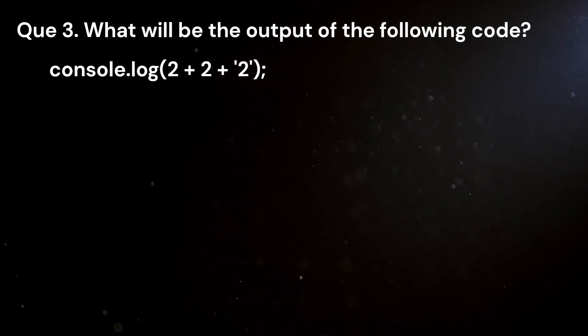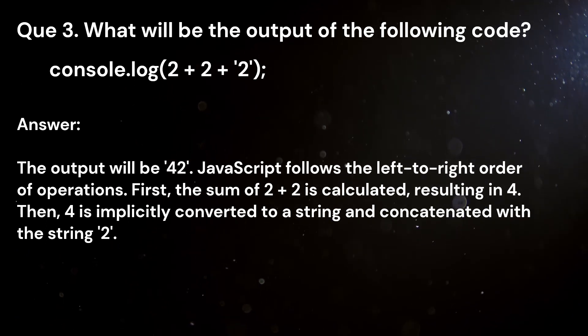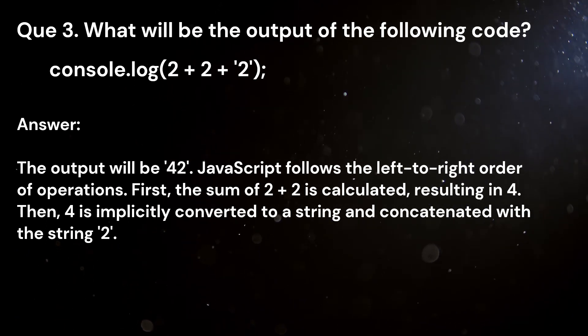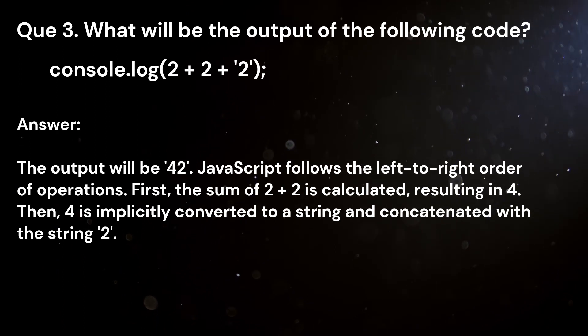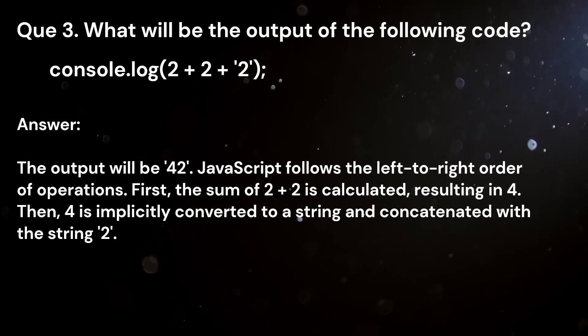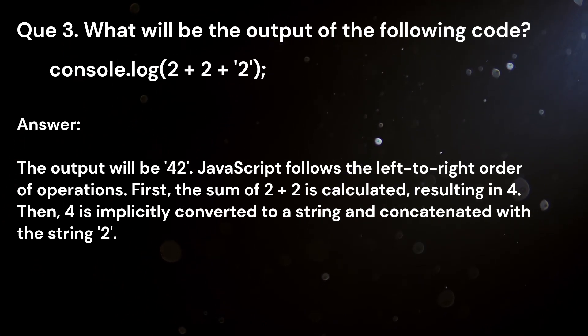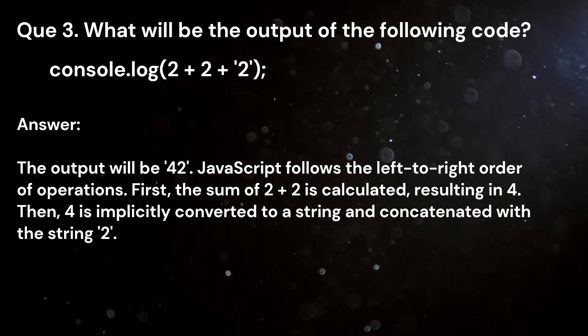Question 3. What will be the output of the following code? console.log(2 + 2 + "2"). Answer. The output will be 42. JavaScript follows left to right order of operations. First, the sum of 2 plus 2 is calculated, resulting in 4. Then, 4 is implicitly converted to a string and concatenated with the string "2".